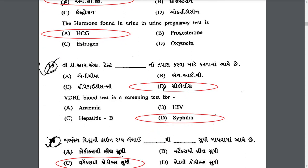VDRL test is done to screen for which condition? VDRL test is a screening test for syphilis. Syphilis is a bacterial infection which is usually transmitted through sexual contact.